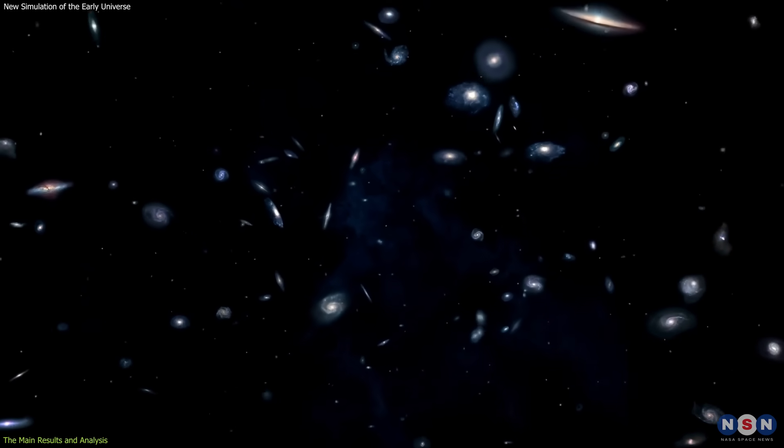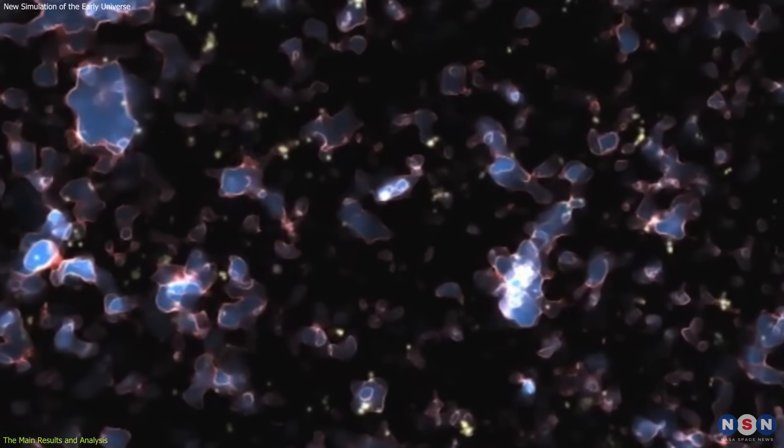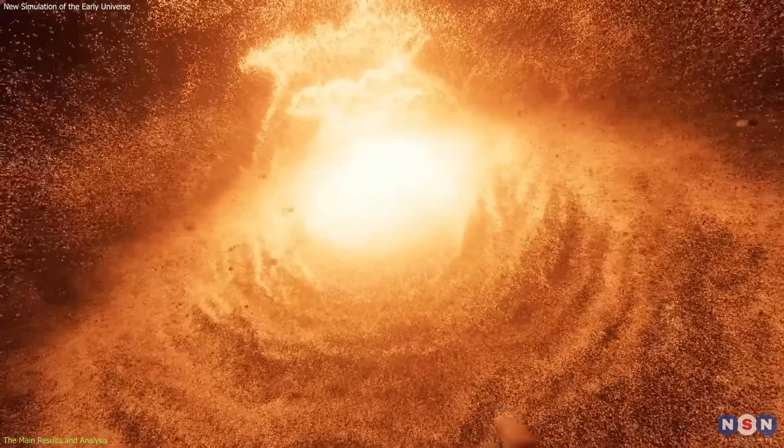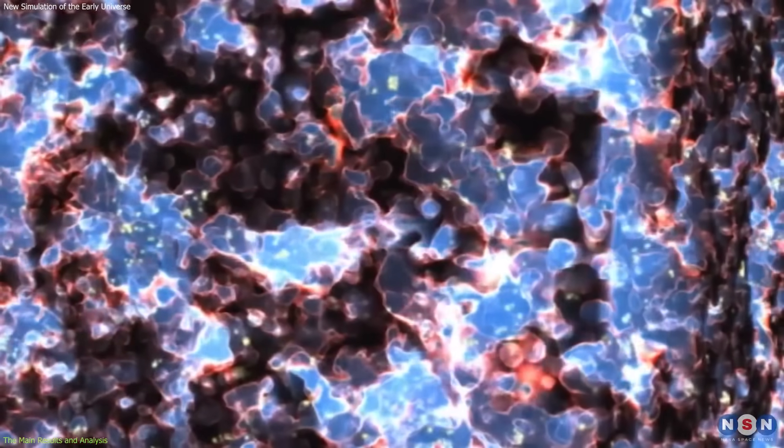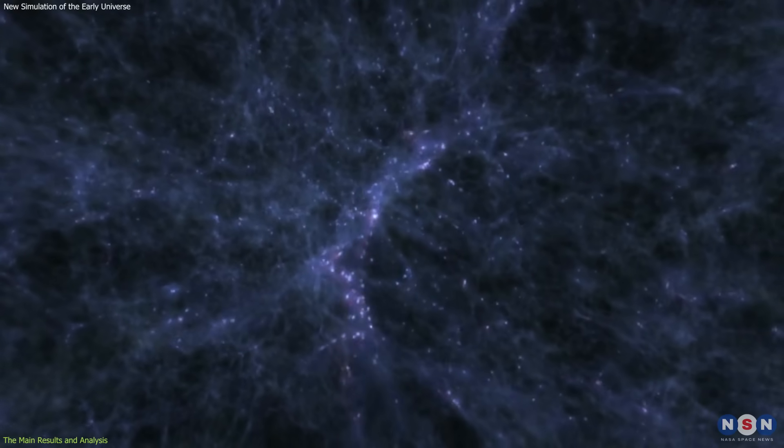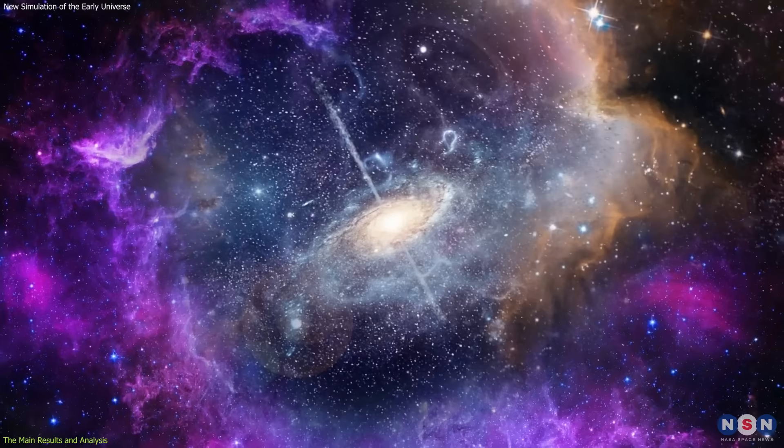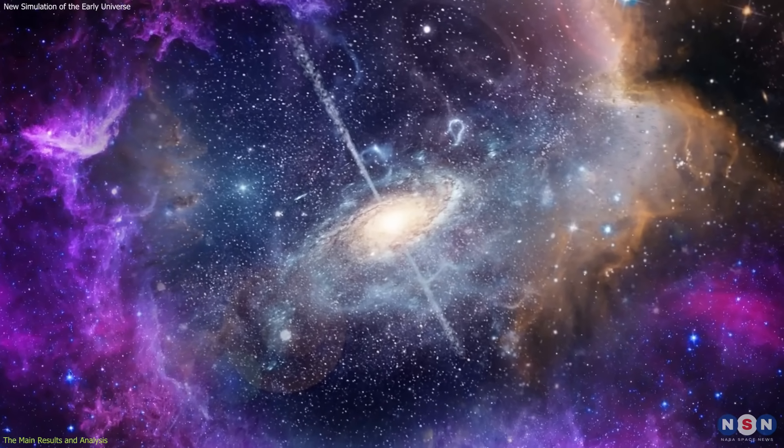Another factor that affects galaxy properties is reionization, which is a process that occurred in the early universe when radiation from stars or quasars ionized most of the hydrogen gas in intergalactic space. This process changed the thermal state and opacity of gas in intergalactic space, affecting how gas flows into or out of galaxies.